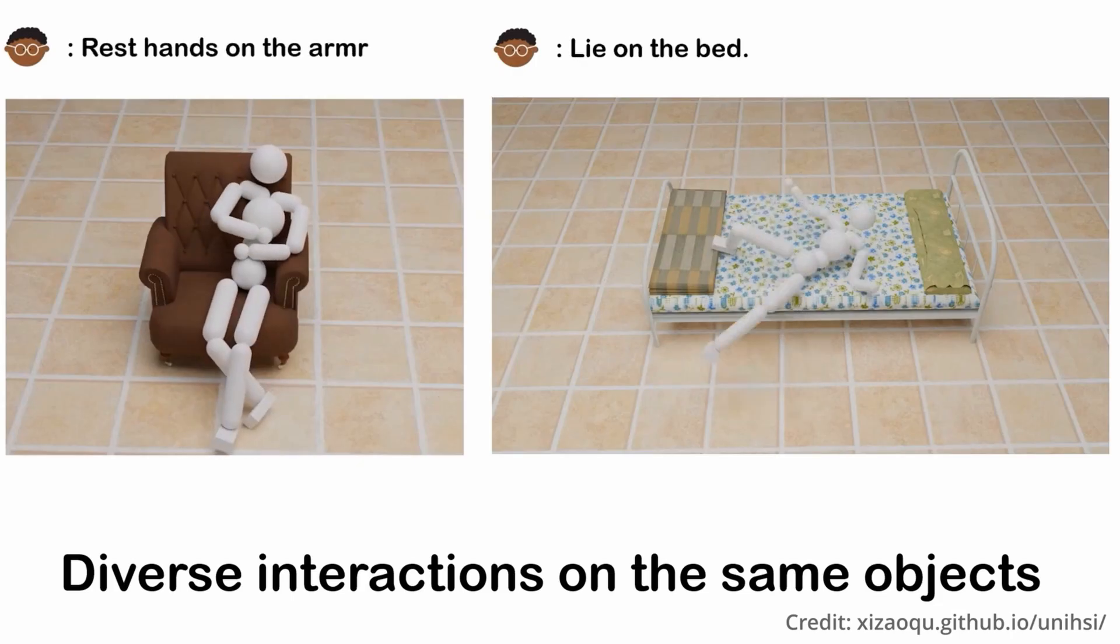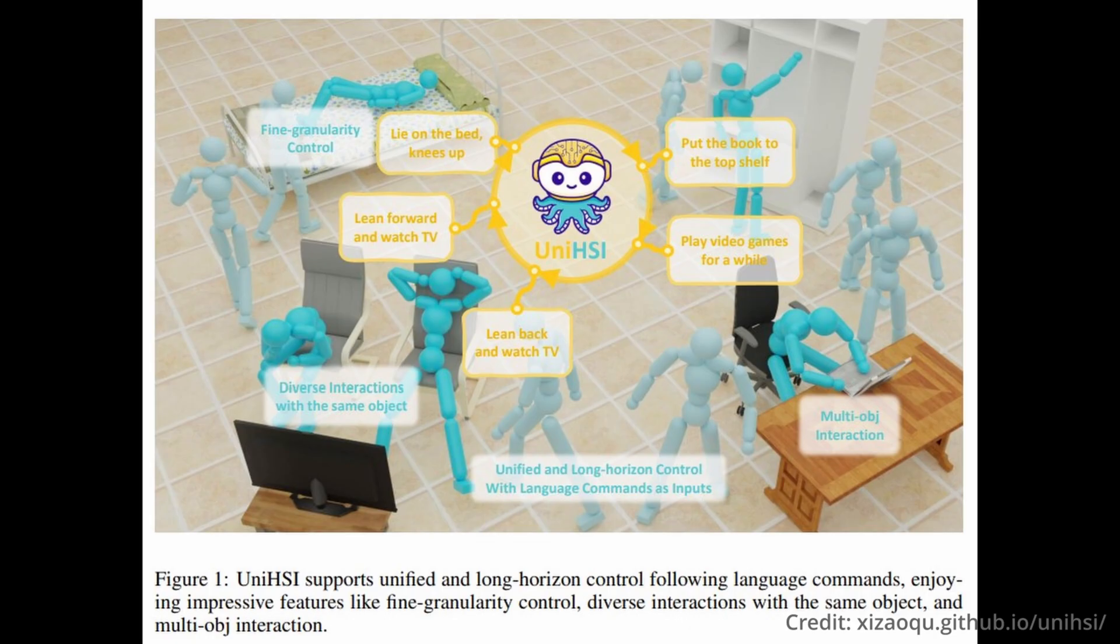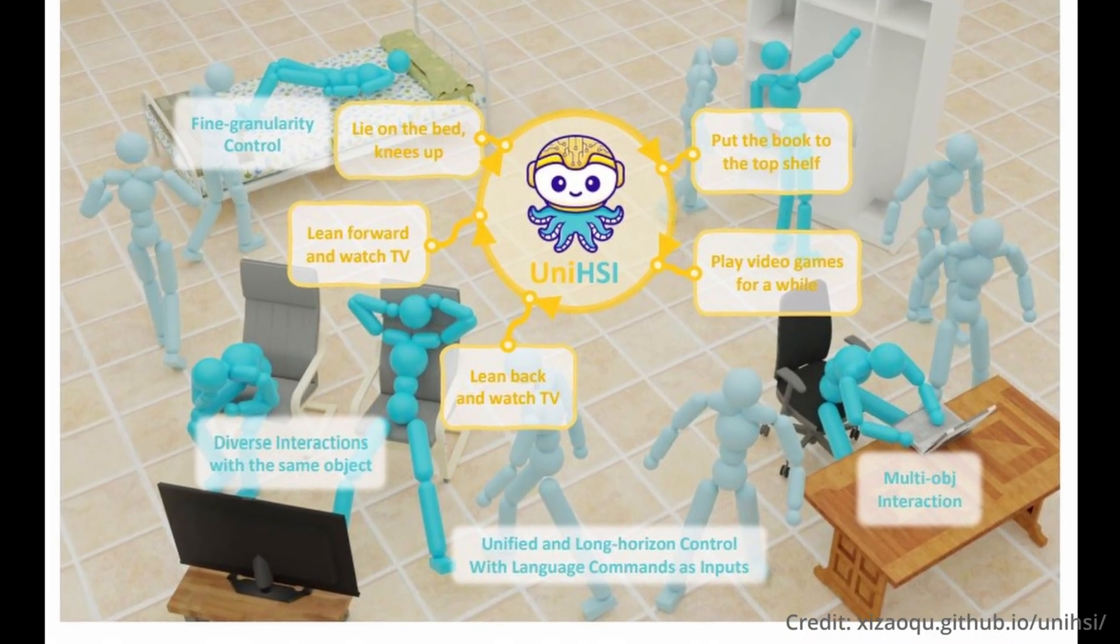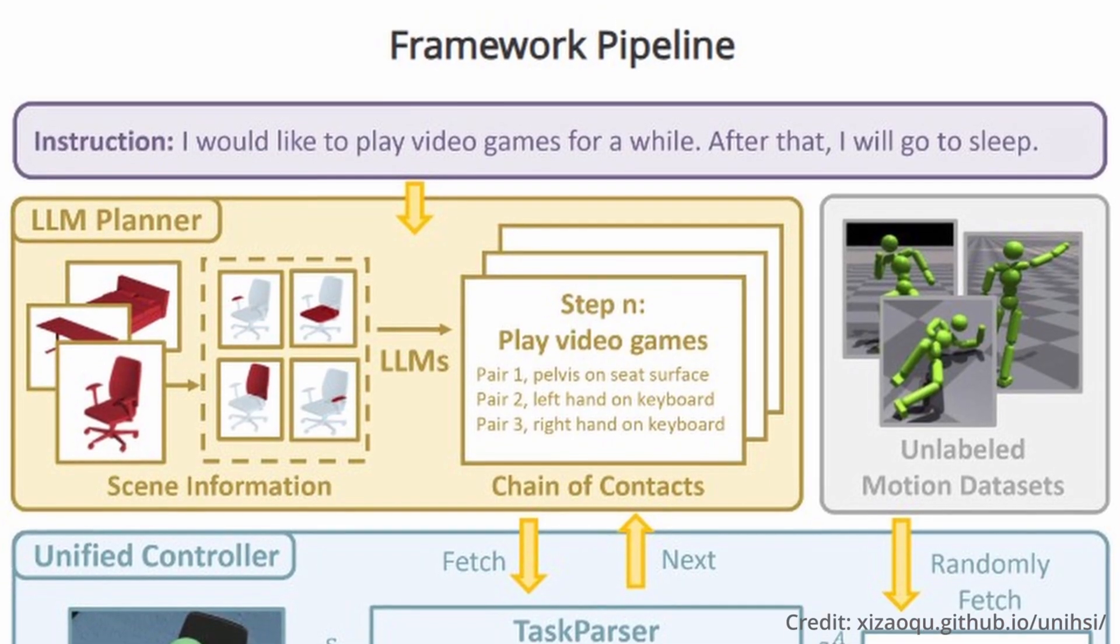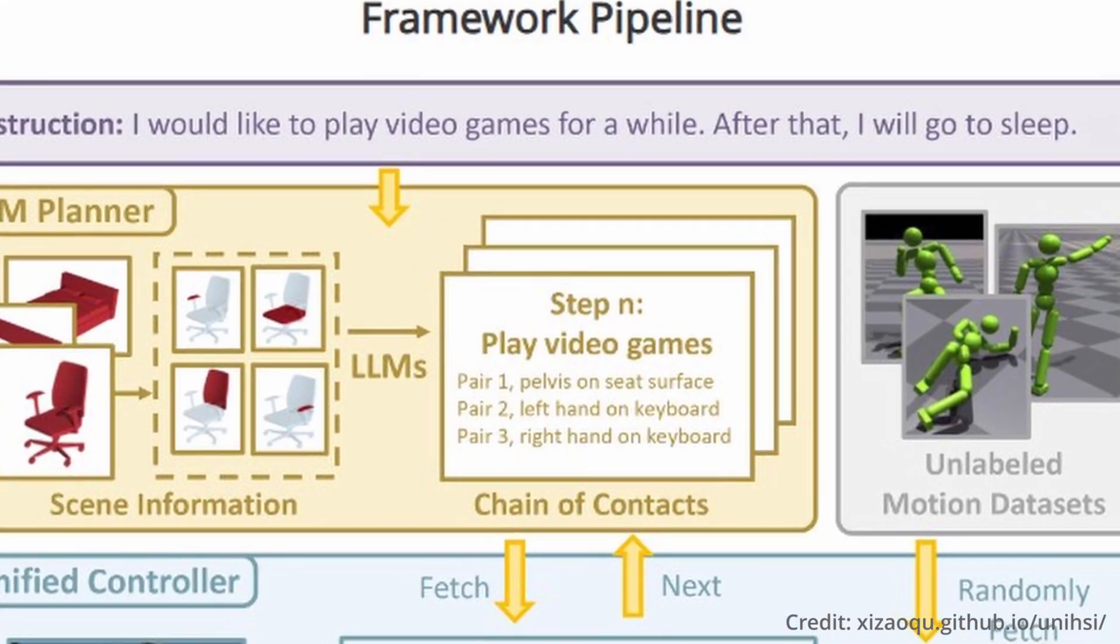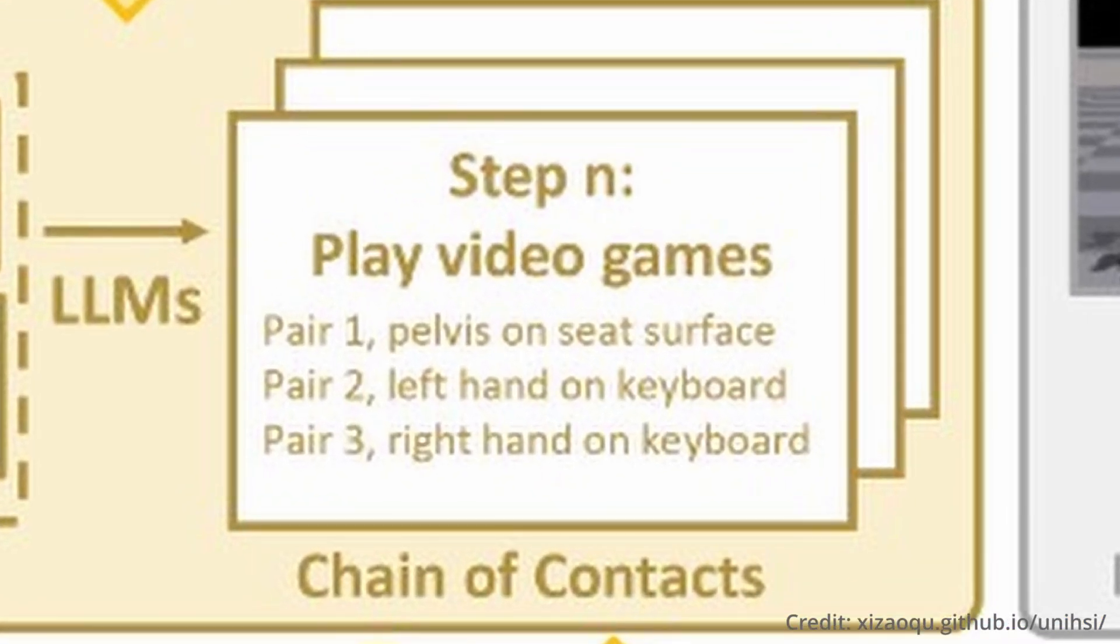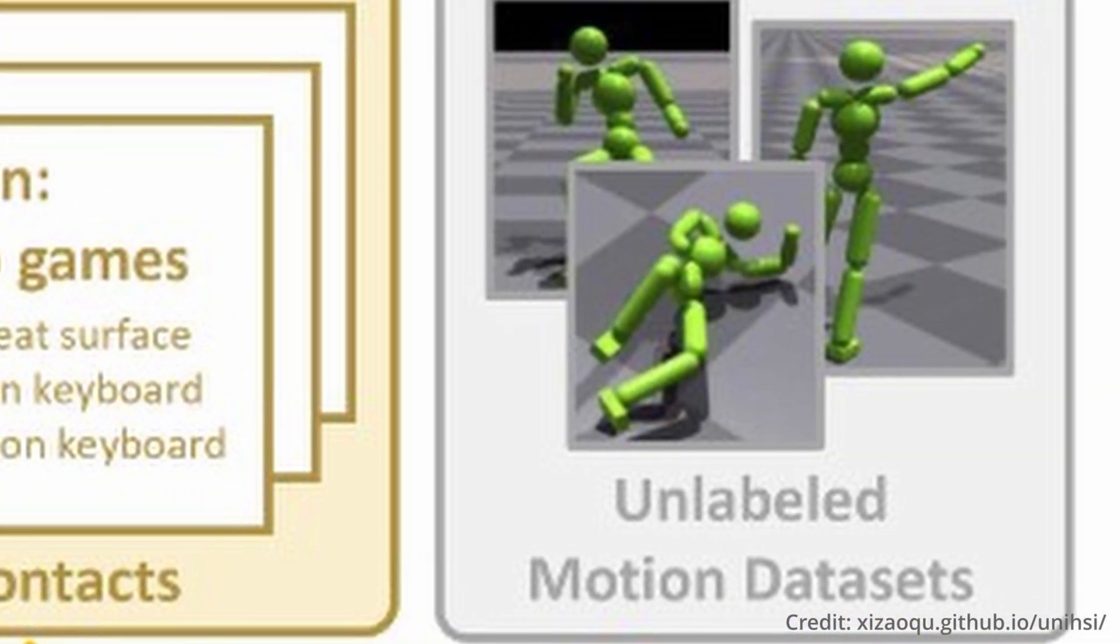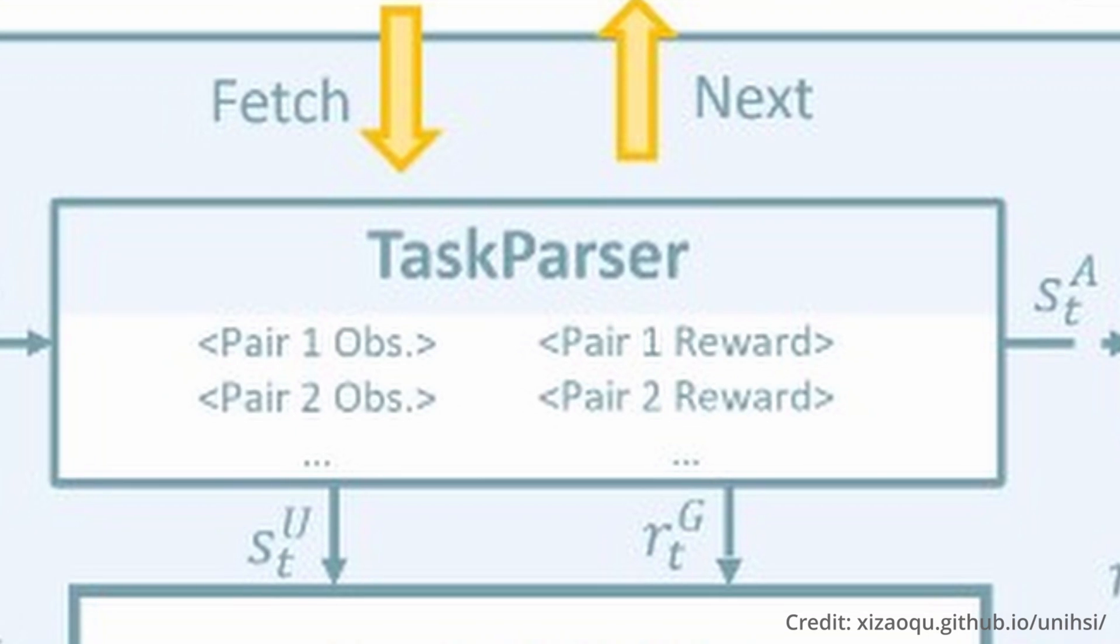In the recently published paper, UniHSI finally enables cohesive control of a host of interactions which are all interpreted through natural language commands, thus enhancing the scope and accuracy of human interaction. Here's how it works. This unique framework is meticulously developed on what's known as a chain of contacts, which is essentially just a series of steps involving human-joint-object part pairs. This concept is naturally inspired by the intrinsic correlation between interaction types and the related human-object contact regions.